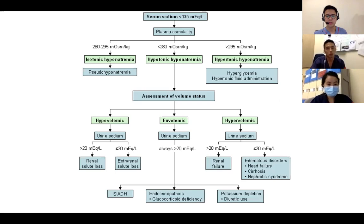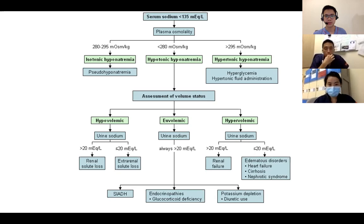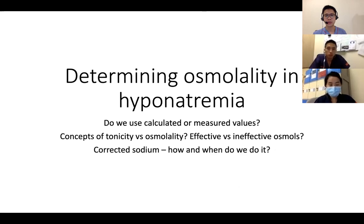Moving on to etiological evaluation. The first step is assessing the osmolality status of hyponatremia — whether it is iso-, hypo-, or hypertonic. Dr. Mok, when evaluating osmolality, do we use calculated or measured values and what is the reason?